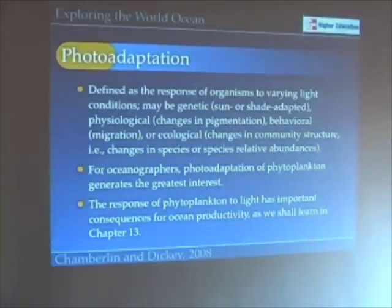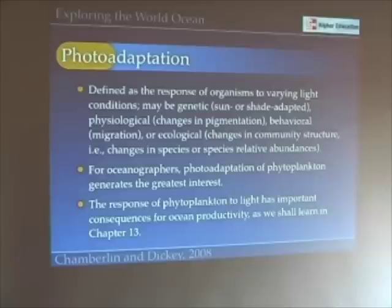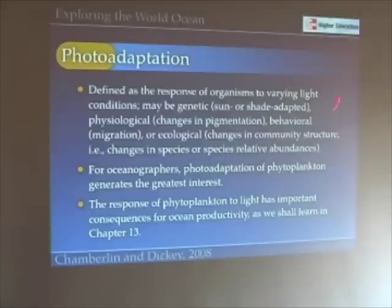If you think about the different kinds of plants you have around your home, some are house plants that live inside and others are outside plants. The main reason is that inside plants prefer shady or darker types of light whereas outside plants like sunny conditions. The same thing happens in the ocean — organisms may be sun or shade adapted, they may undergo changes in pigmentation in response to the colors of light, they may migrate in response to light, or the entire community may change.